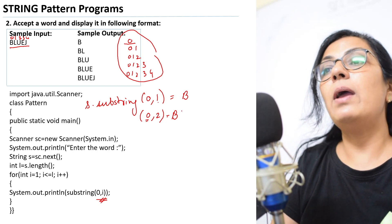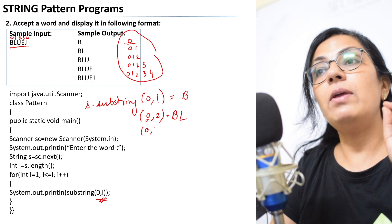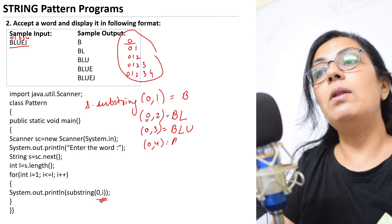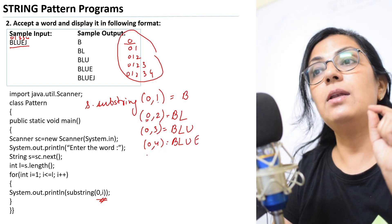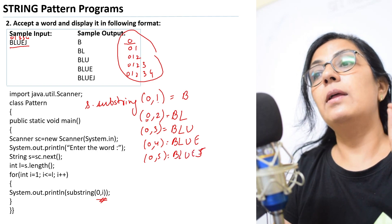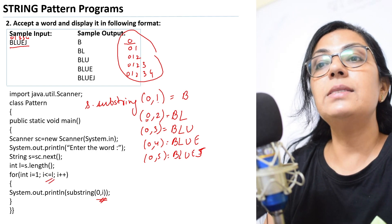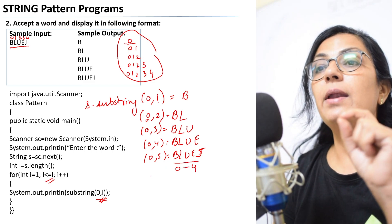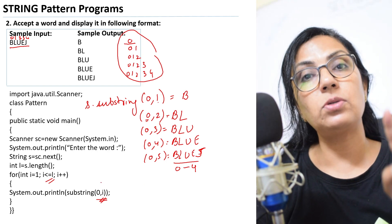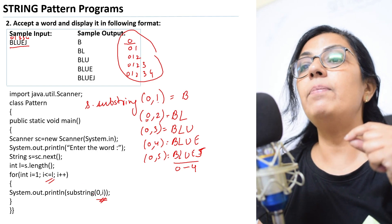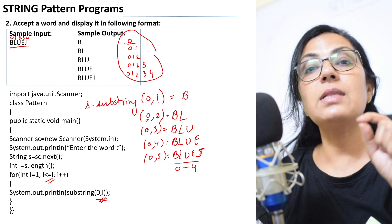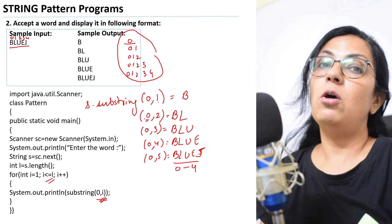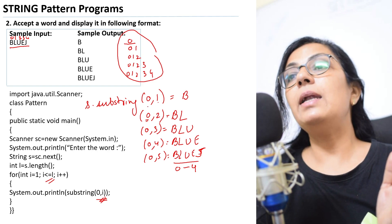Next time substring(0,3) extracts B, L, U; then (0,4) gives B, L, U, E; then (0,5) gives B, L, U, E, J. The loop goes from i=1, with i less than or equal to L. If I write (0,4) it only extracts index zero through three, so I take the loop till L so the last iteration gives characters at index zero through four. Substring extracts from the starting index up to but excluding the ending index.